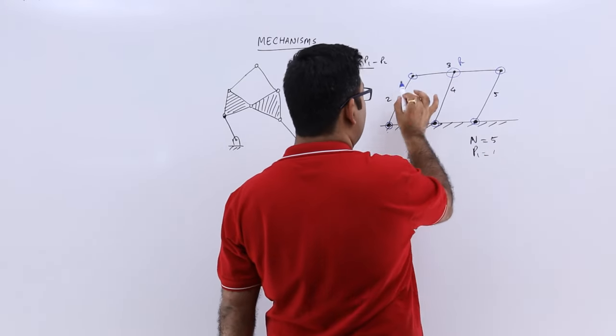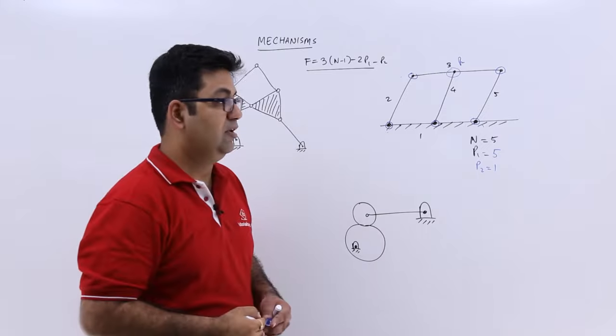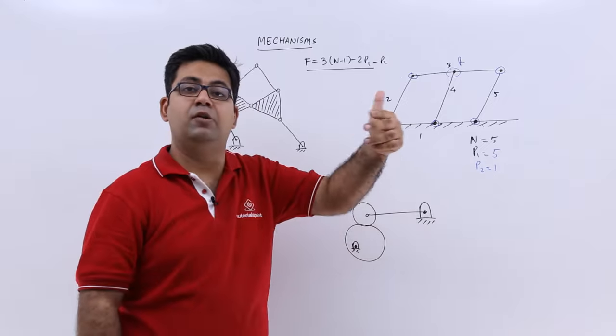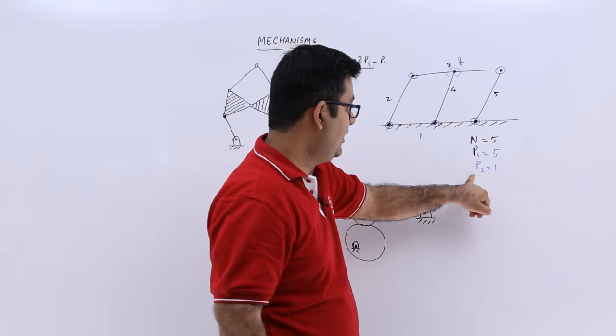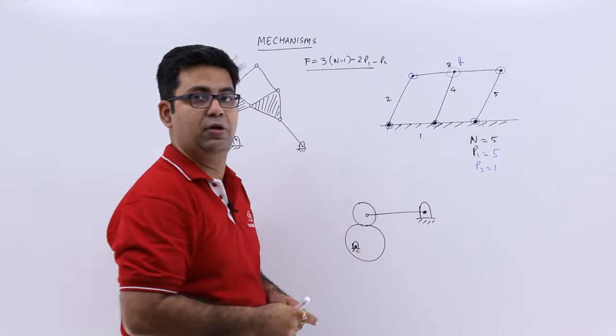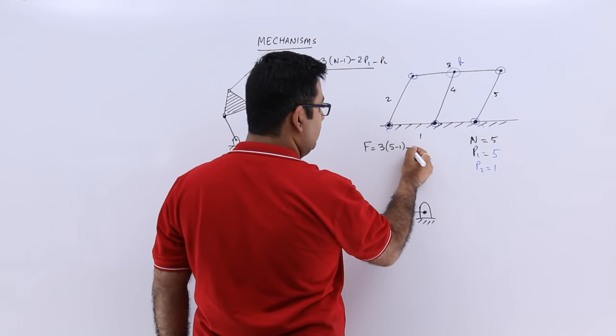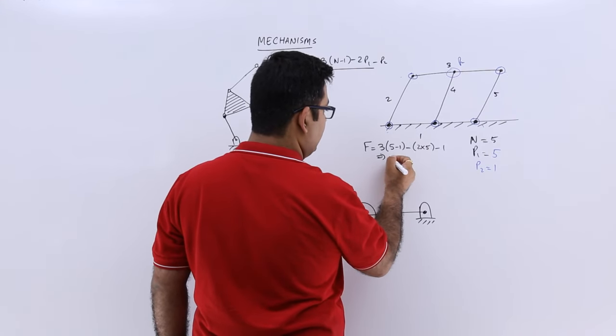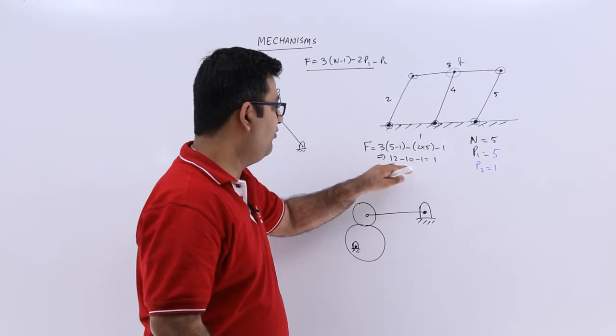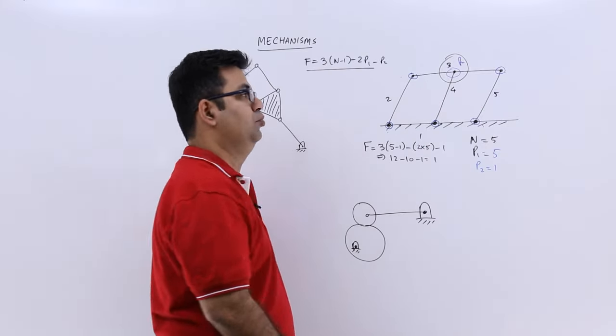So p1 becomes 1, 2, 3, 4, 5, and p2 becomes 1. So even if you choose this as a p1 joint, your degree of freedom will become 0. But if you give this a value of 1, then the degree of freedom will become 1. So there will be a lot of difference because this will have a little bit of slipping also. So f would be 3(5-1) minus 2(5) minus 1, that is 12 minus 10 minus 1, which equals 1. So this is a mechanism with a degree of freedom as 1. So the catch here was to recognize this as a p2.